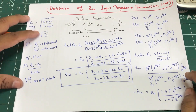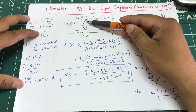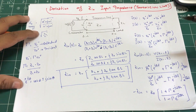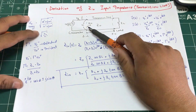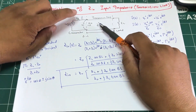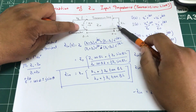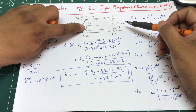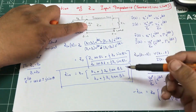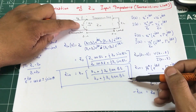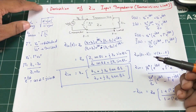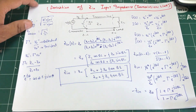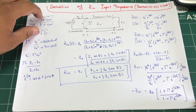This is the input impedance of the transmission line — what you see at the generator end. Previously when studying voltage reflection coefficient, we assumed Z₀ equaled ZG, and mismatches were only due to the load. But here Z_in can itself create a mismatch. That's how you derive the input impedance of a transmission line. If you have any questions, leave them in the comments and don't forget to subscribe.